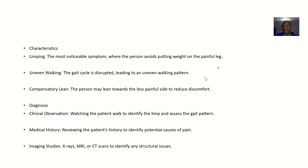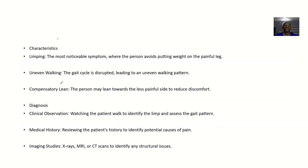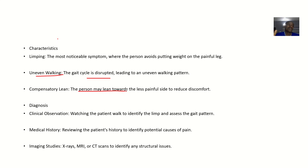What are the characteristics of antalgic gait? Limping — as the person is walking, they are limping. There is uneven walking, as the gait cycle is disrupted, leading to an uneven walking pattern — the time spent on both legs is supposed to be the same. There is also a compensatory lean, where the person may lean towards the painless side just to reduce discomfort, spending more time on the side that has no problem.